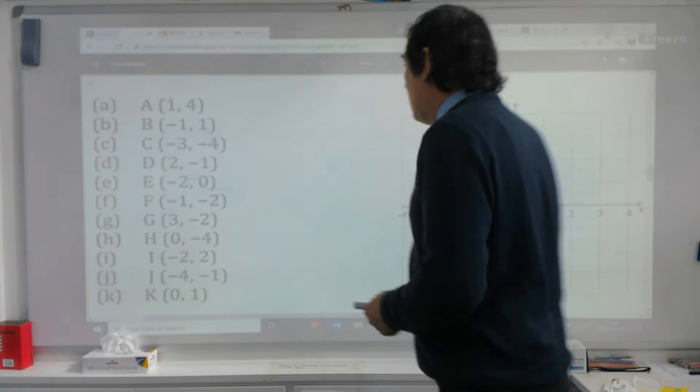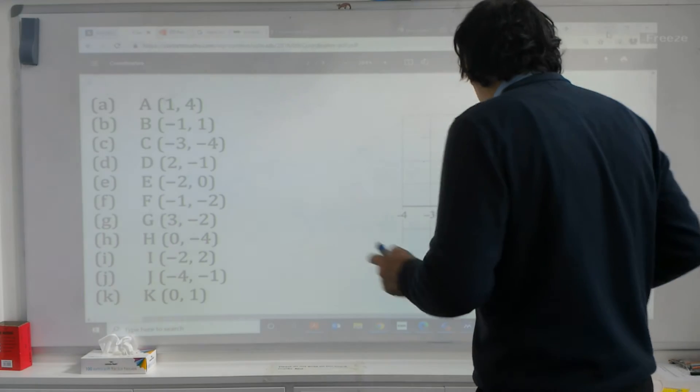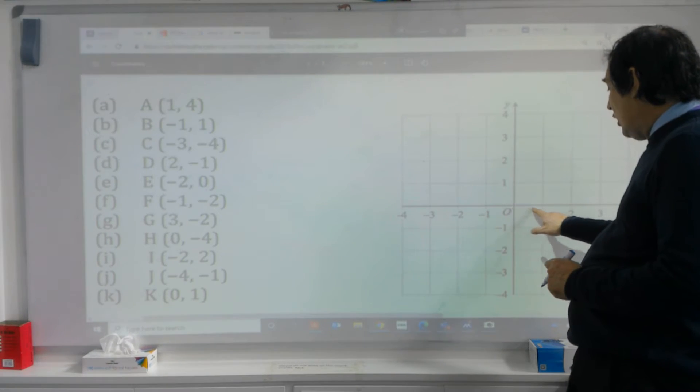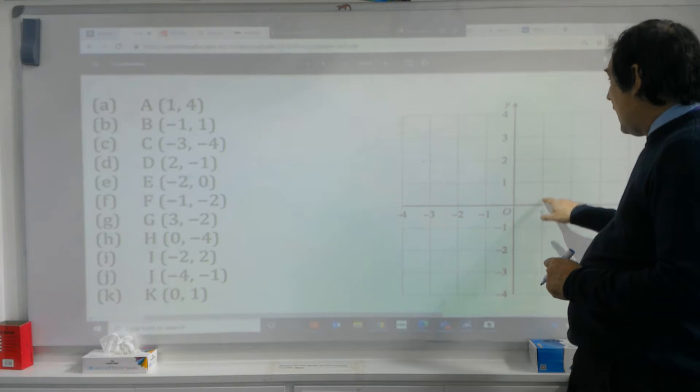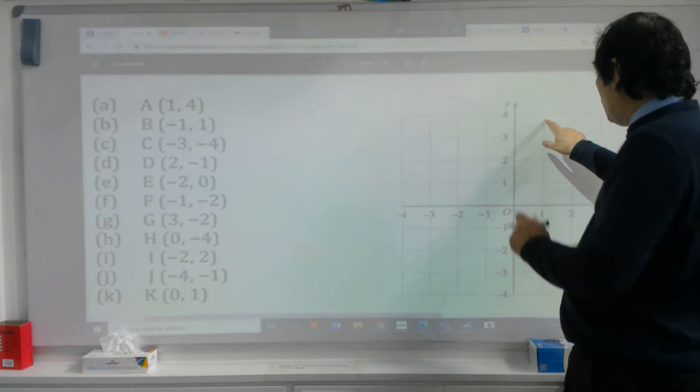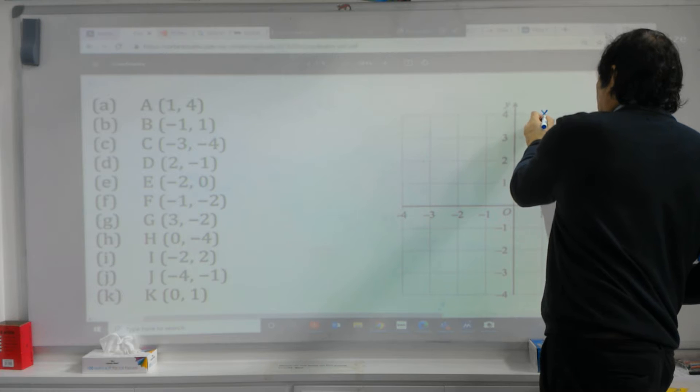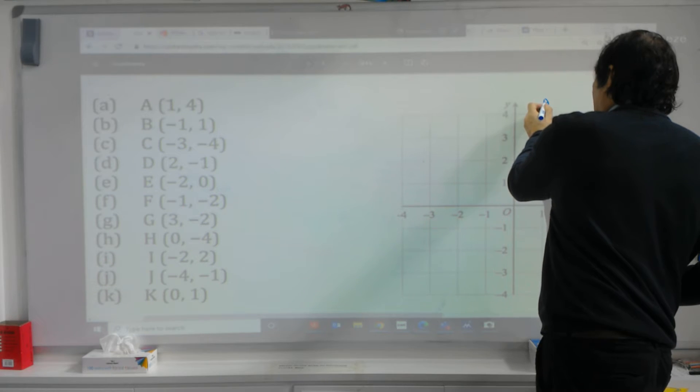If we've got a plot that has one four, it means on our axes we have to go along one and then up four. So our first number is always our along number. So I'll plot it across here and mark it with the letter A.